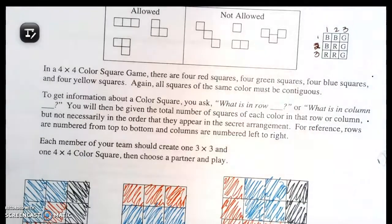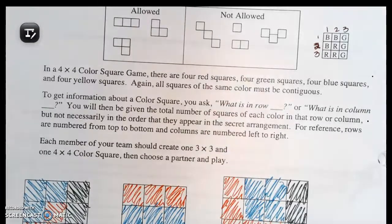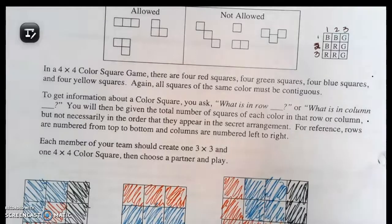You would say, what is in row 1? What is in column 2? You will then be given a total number of squares of each color in that row or column, but not necessarily in the order that they appear in the secret arrangement. For reference, rows are numbered from top to bottom, and columns are numbered from left to right.